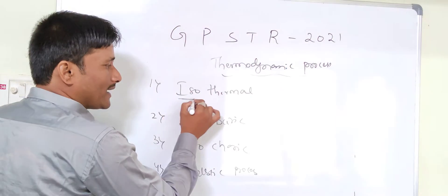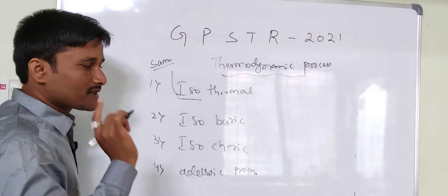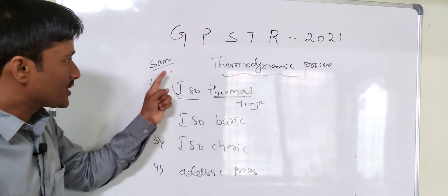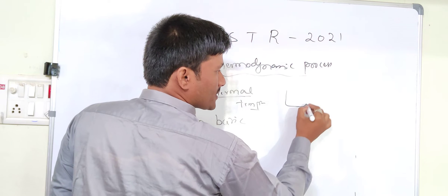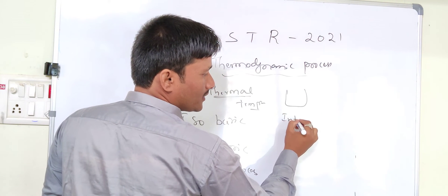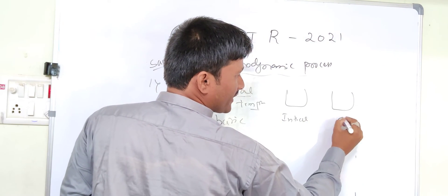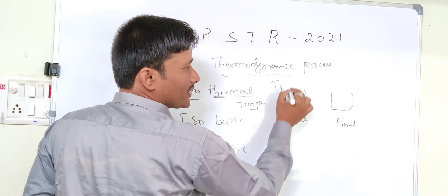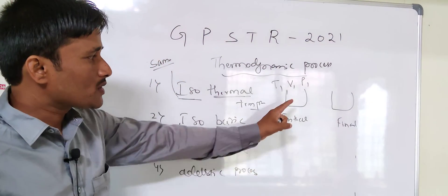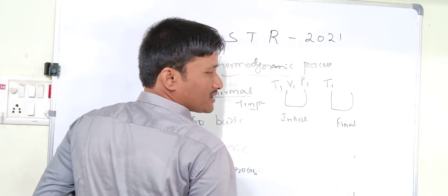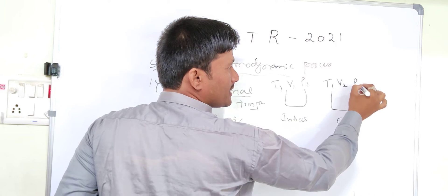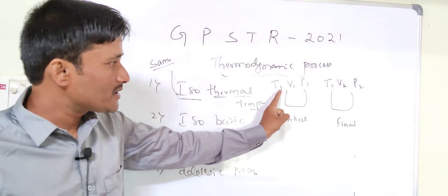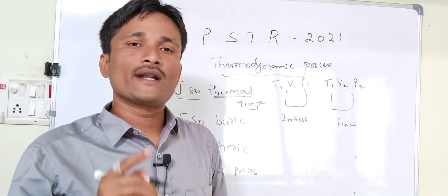The word 'iso' means same, and 'thermal' means temperature. In an isothermal process, consider an initial state where temperature is T1, volume is V1, and pressure is P1. After the process is complete, temperature is T1, volume is V2, and pressure is P2. So volume and pressure change, but temperature remains constant — that process is called the isothermal process: the process where temperature remains constant.